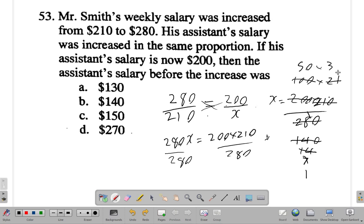50 by 3 gives you 150, so it would have been $150. All right, so $150 would be that amount.